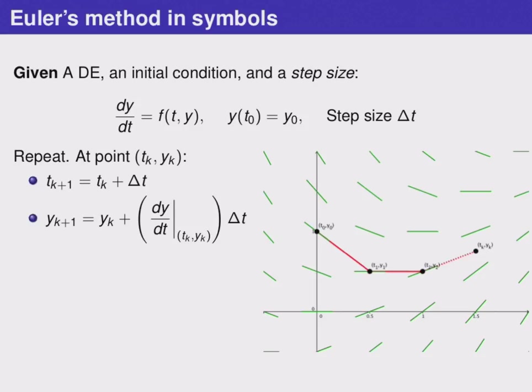We can keep repeating this at any point. So if we're at a point TK, YK, where K represents how many steps we've taken, we can calculate our next point called T K+1, Y K+1, by using these formulas.